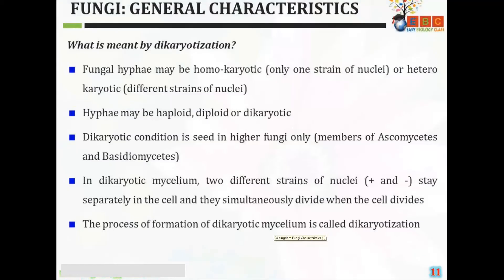Fungal hypha may be homokaryotic, meaning only one type of nuclei, or heterokaryotic, meaning two different types of nuclei are present. Hypha may be haploid, diploid, or dikaryotic. Dikaryotic condition is seen in higher forms of fungi — only in members of Ascomycetes or Basidiomycetes. In dikaryotic mycelium, two different strains of nuclei — positive and negative — stay separately in the cell and simultaneously divide when the cell divides. The process of formation of dikaryotic mycelium is called dikaryotization.